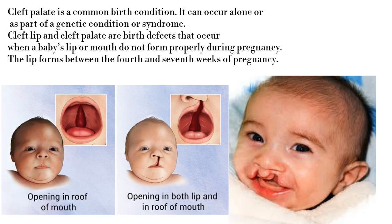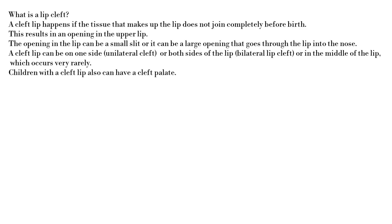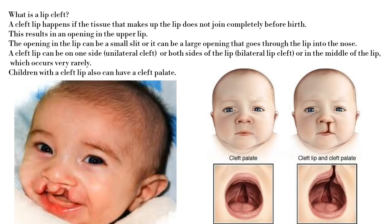Cleft lip and cleft palate are birth defects that occur when a baby's lip or mouth do not form properly during pregnancy. The lip forms between the fourth and seventh weeks of pregnancy. A cleft lip happens if the tissue that makes up the lip does not join completely before birth, resulting in an opening in the upper lip.